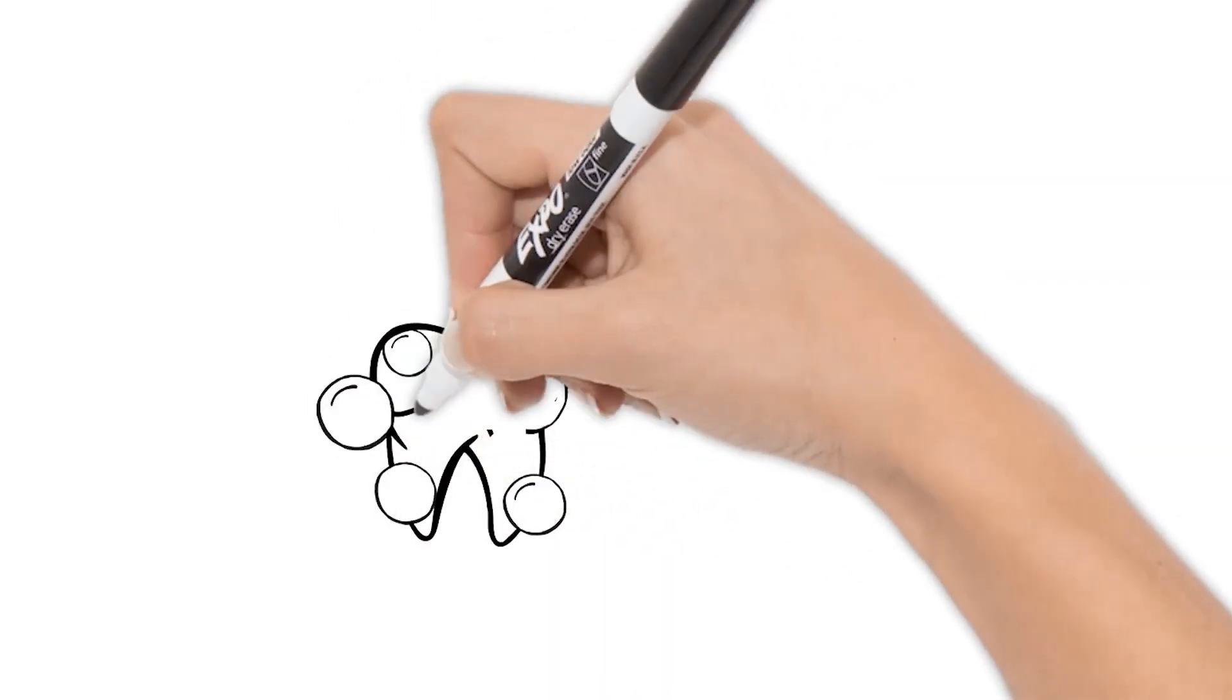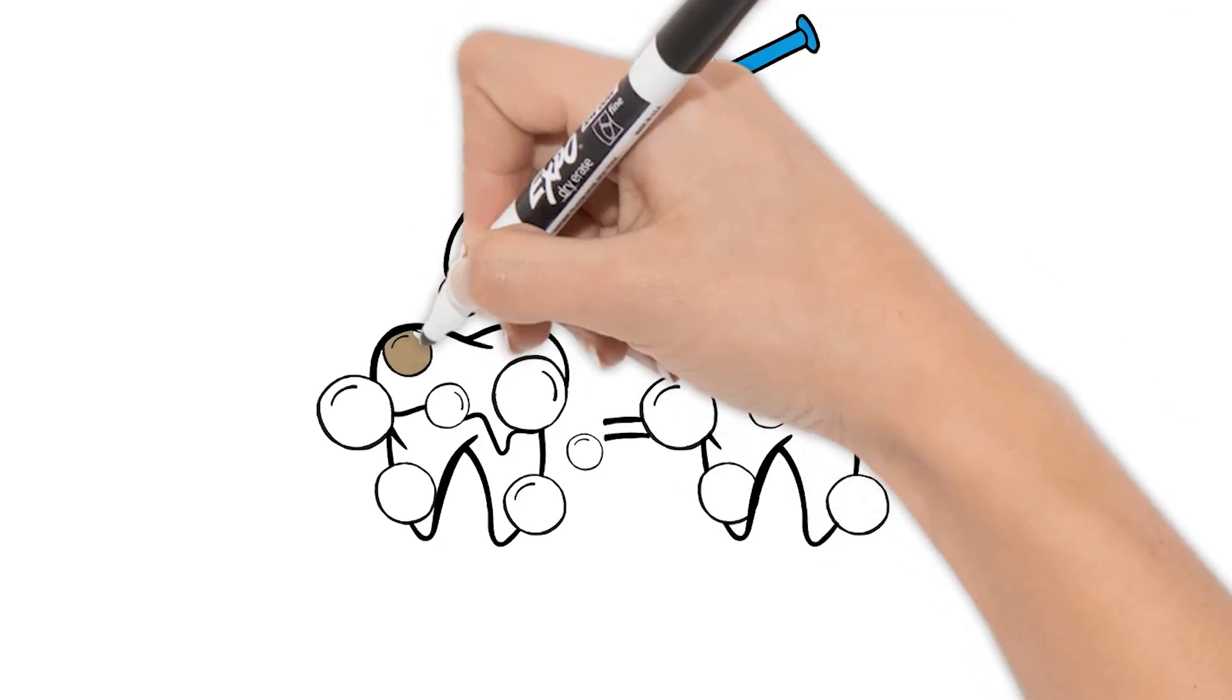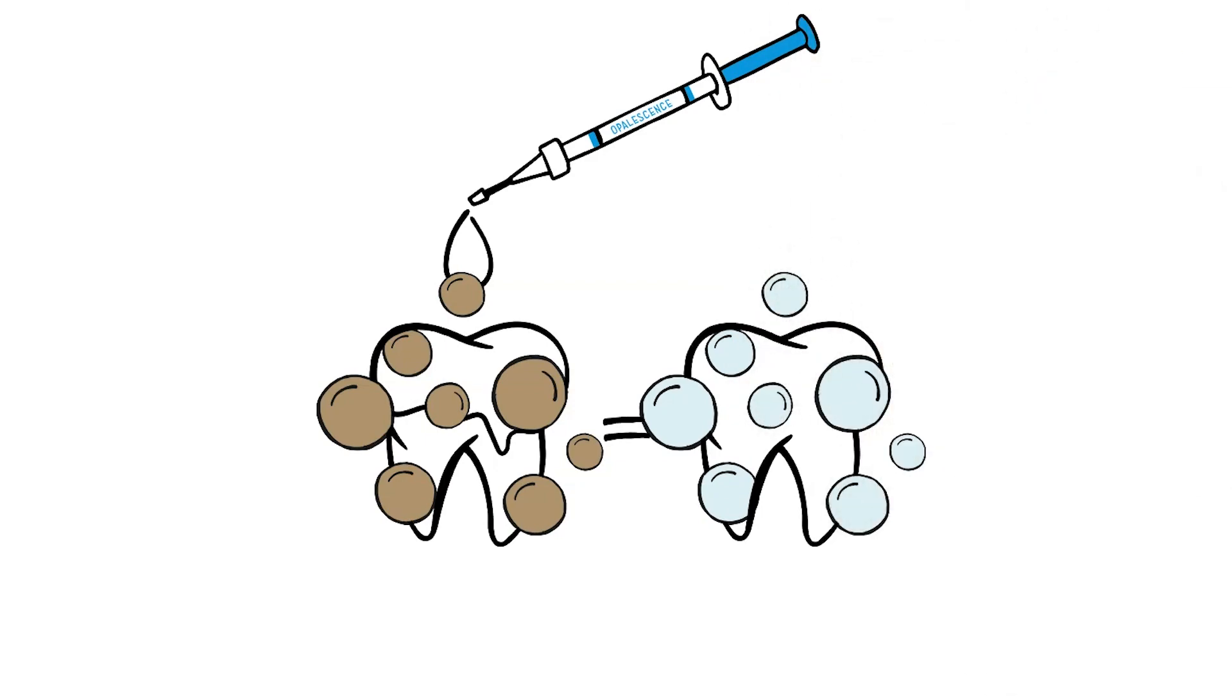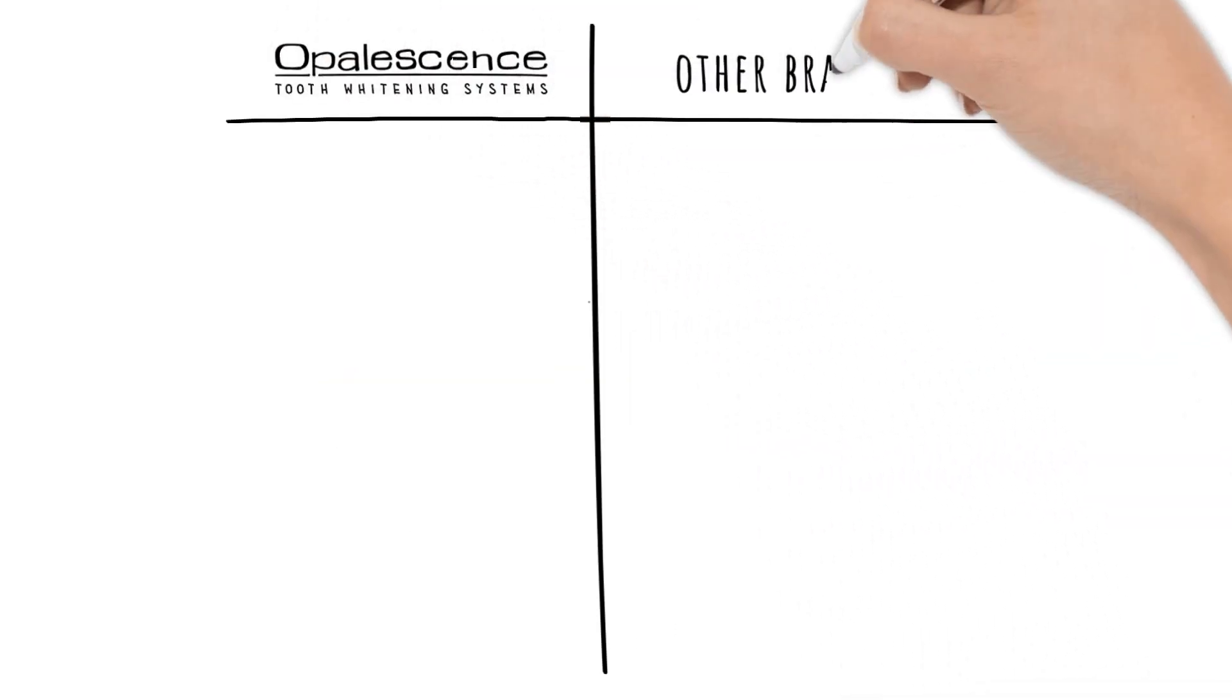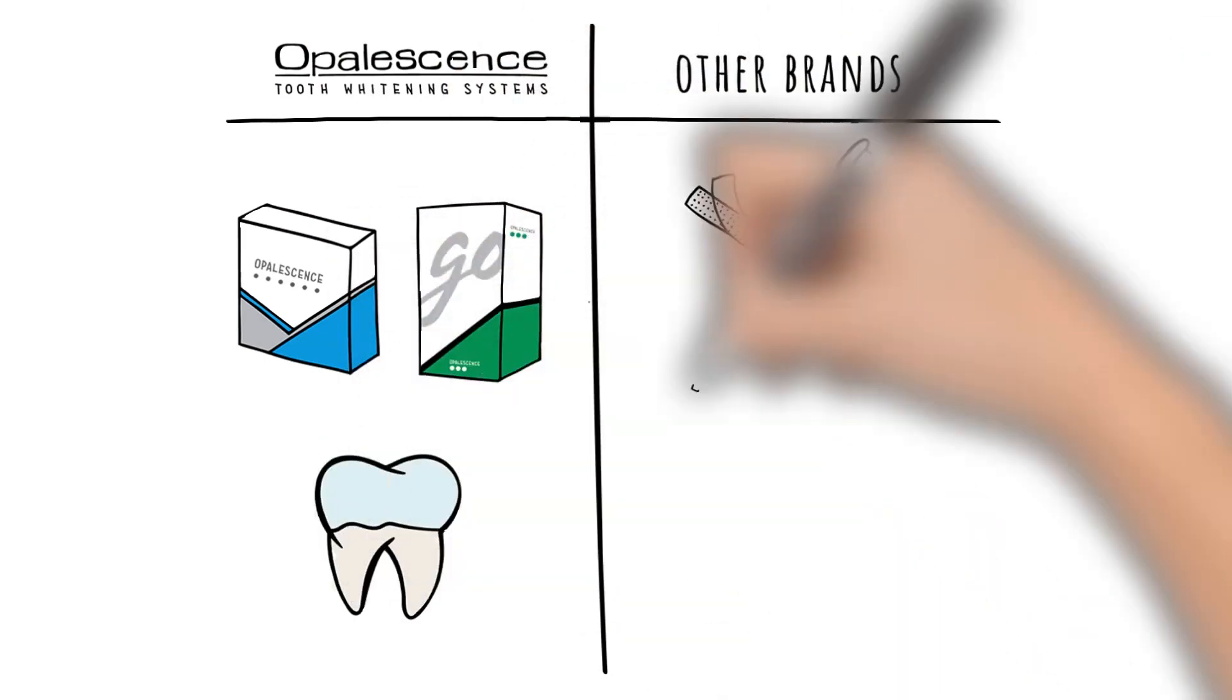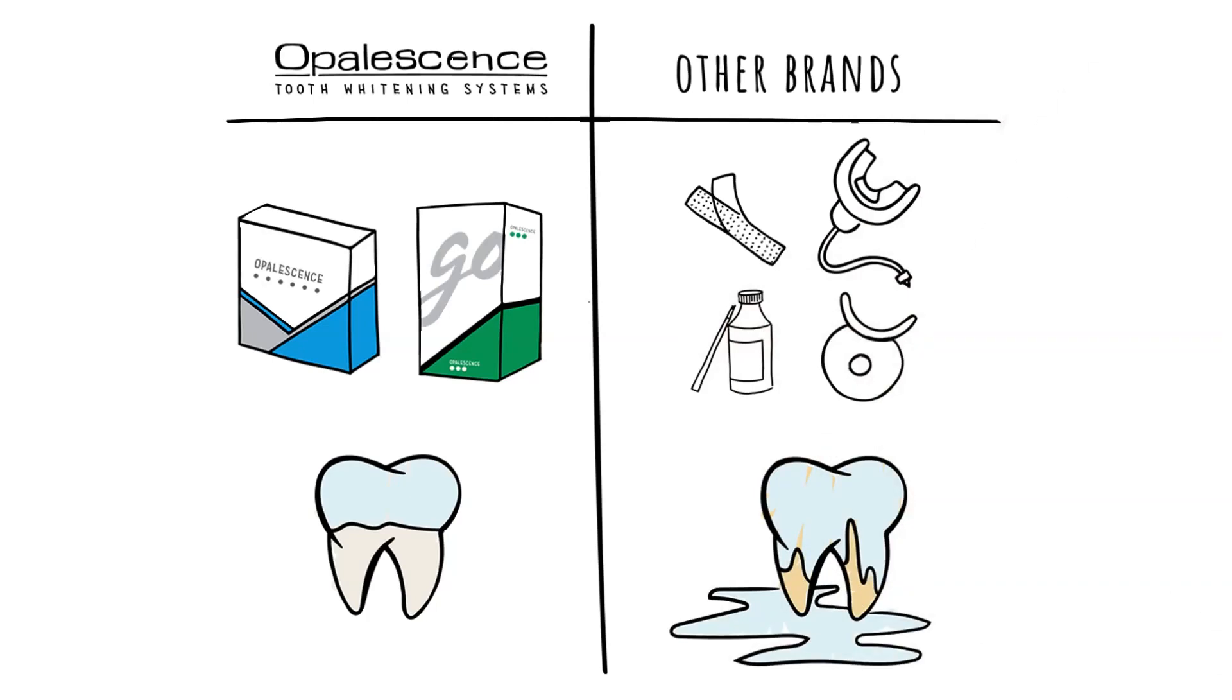The peroxide in Opalescence teeth whitening gels passes into your teeth to oxidize the discolored molecules in your enamel and dentin, removing stains and whitening your smile. Unlike other formulas, our gel is sticky and viscous, so it sticks in place for maximum effectiveness and doesn't go anywhere you don't want it, like your gums for example.